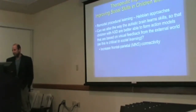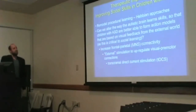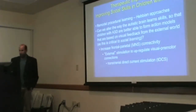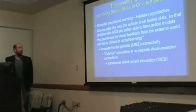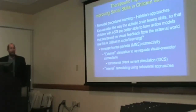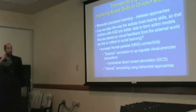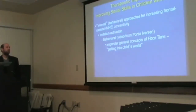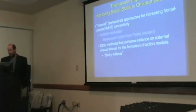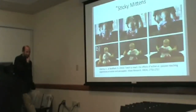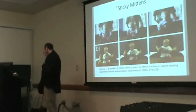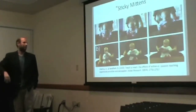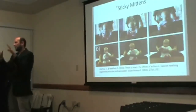We're thinking about a few different approaches to increase frontal-parietal, mirror neuron system connectivity — including external brain stimulation methods to upregulate visual-premotor connections, though ideally behavioral approaches would be best. One fascinating line of research involves 'sticky mittens' — at three months of age, children can't grasp objects and don't show a preference for looking at faces over objects. By putting sticky mittens on three-month-olds, they can suddenly grasp objects in the environment because the mittens and objects are sticky.